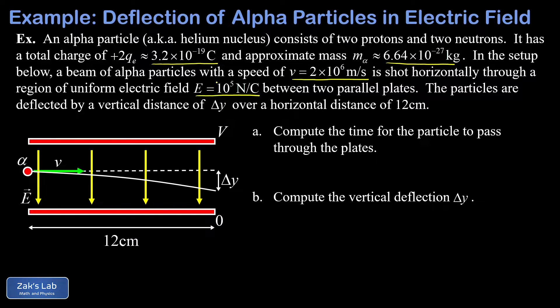And what we're after here is the vertical deflection distance, delta Y, as these particles pass through the 12 centimeter horizontal length between these plates.